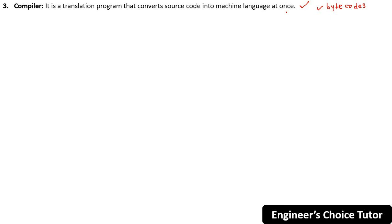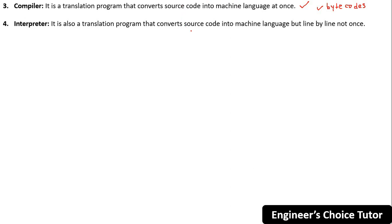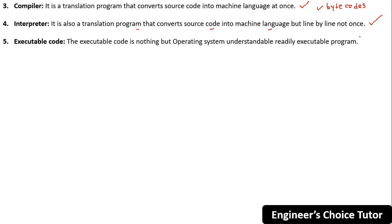An interpreter is also a translation program, but it converts source code into machine language line by line, not all at once. This is the basic difference between a compiler and an interpreter. Executable code is the operating-system-understandable executable program.